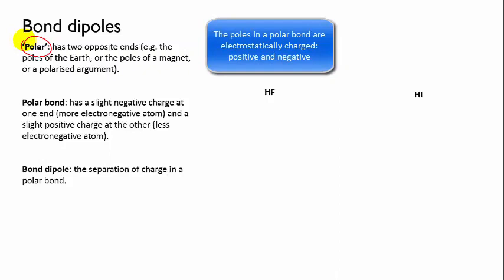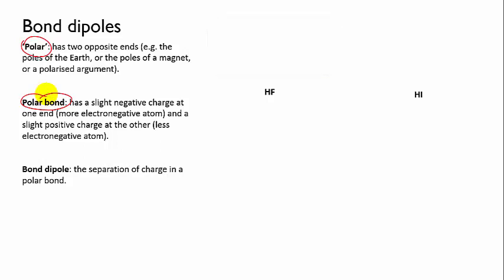A polar bond is a bond that has a slight separation of charge. By this I mean that there's a small excess of negative electrostatic charge at one end, that's where the greater electron density is, and a small excess of positive electrostatic charge at the other end. These two ends represent the two poles of the polar bond, and we can also refer to them as the bond dipole, which is just a fancy way of saying it has two opposite ends.